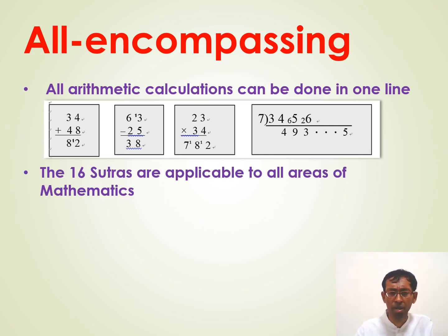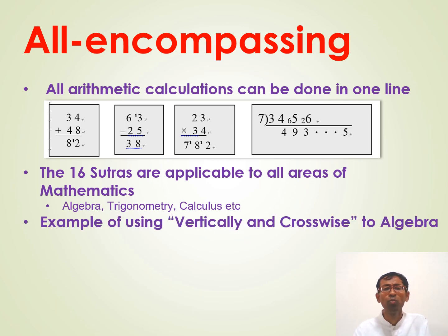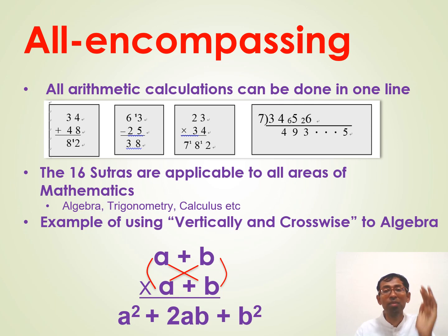And, the sixteen sutras that we learned, that we saw a while ago, they are applicable to all areas of mathematics, not just arithmetic. They are also applicable to algebra, trigonometry, calculus and so on. For example, we can use the vertically and crosswise formula of multiplication. We can use it for algebra as well. For example, a plus b times a plus b. You can see, first vertically, on the left, a times a is a square. And then, the cross-multiply and add, ab plus ab is 2ab. And then, on the right, we have the vertical multiplication. That is, b times b, b square. That's all.